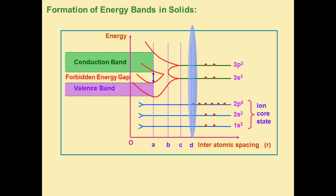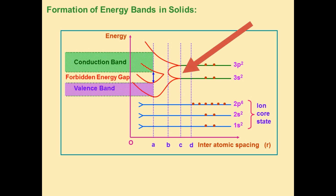When r equals OD, observe that the blue lines — the inner shells — are unaffected, and the energy levels remain discrete. When OC is less than r less than OD, as shown by the arrow in the graph, no splitting of energy levels takes place in this region, but there is a tendency of splitting. It means atoms come a little bit closer and develop a tendency for splitting of energy levels.